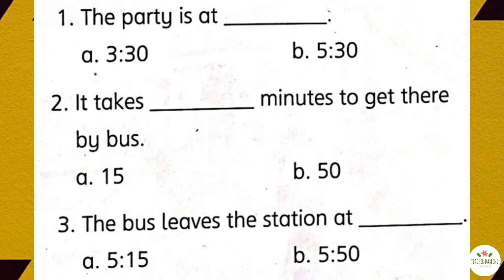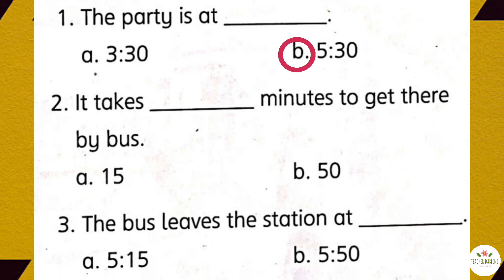Activity 4. Listen and circle. Number 1. So Gary, are you going to come to my party tomorrow at half past 5? Sure. What time did you say it's going to be? At half past 3? No, it's going to be at half past 5. Half past 5, right. The party is at half past 5. Number 2. Do you know how to get there? You can ride your bike there or come by bus. How long does it take? It's faster by bus — 15 minutes by bus and 50 minutes by bike. I'm going to come by bus then. That's a good idea. It takes 15 minutes to get there by bus.